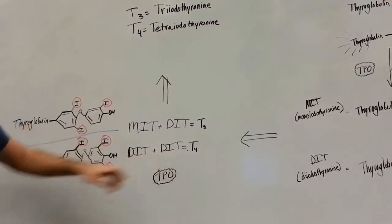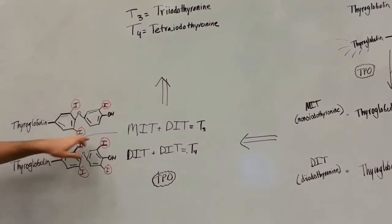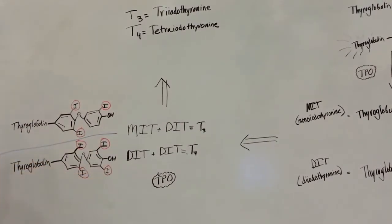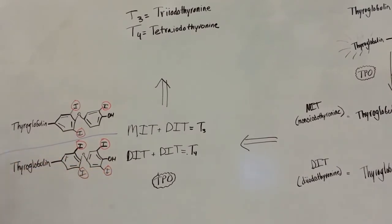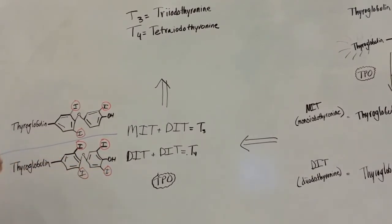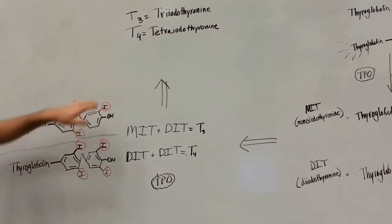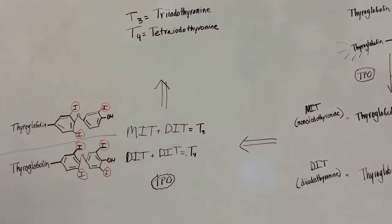Likewise, if you combine two DITs, then you're going to have four iodine molecules. And that'll be T4. Those are thrown together by TPO, the enzyme that does a lot of things here. And here's the technical names for the T3 and T4 hormone.